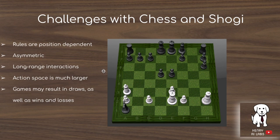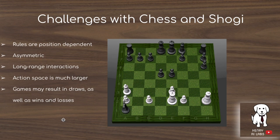The action space in chess and shogi is also much larger — you select a piece and then its movement, rather than just placing a stone. Additionally, games may result in draws, making the reward signal more complicated since it's not just a binary plus one or minus one, but also includes an intermediate value of zero for a draw.